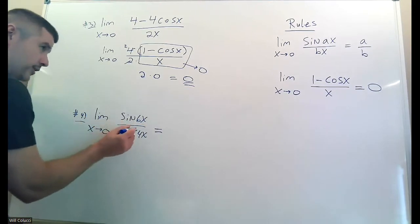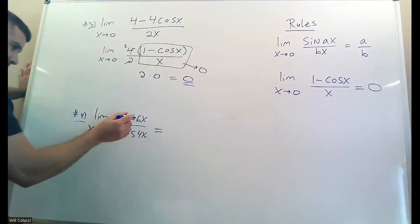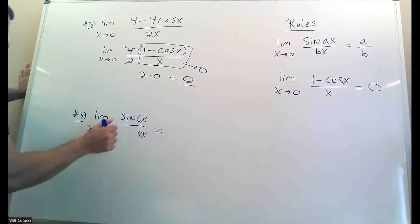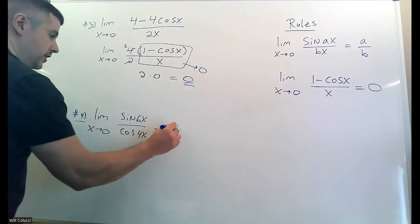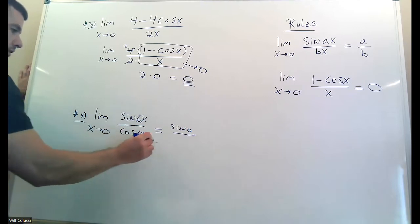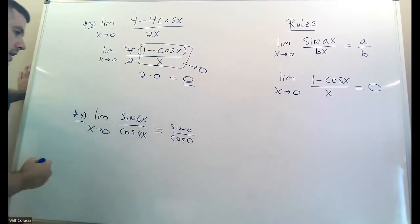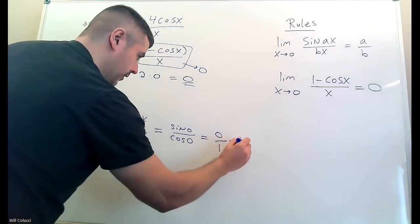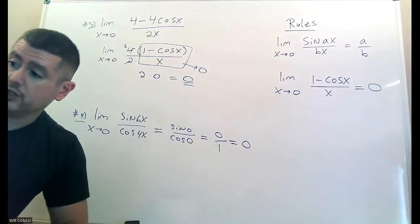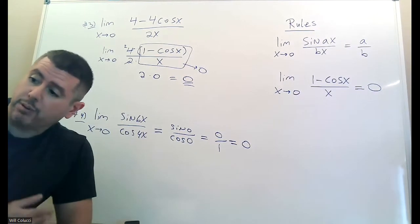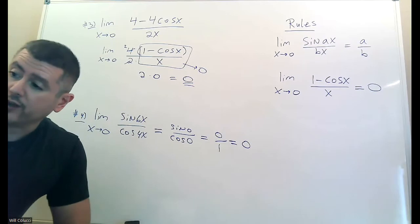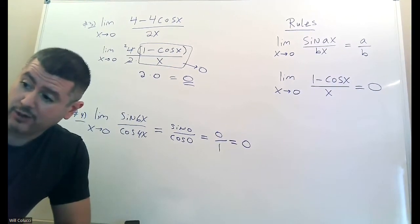This one is different — there's no x on the bottom, so the a-over-b shortcut doesn't apply here. Try plugging in: six times zero is zero, four times zero is zero. Sine of zero is zero, but cosine of zero is one — not zero. So you don't get zero over zero; you get zero over a legitimate number. A lot of times plugging in just works. The bottom isn't zero, so it's fine. Always try plugging in first.